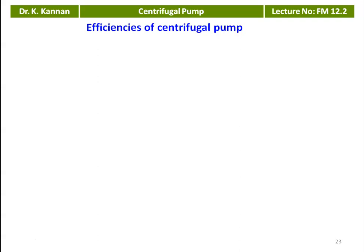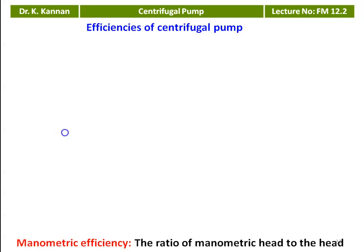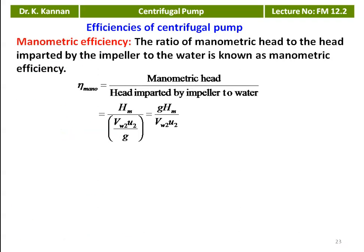Once we know the various losses occurring in the centrifugal pump, we calculate the efficiency. The first is manometric efficiency — the ratio of manometric head to the head imparted by the impeller to the water. The manometric efficiency equals G·Hm divided by Vw2·U2, where Hm is the manometric head and Vw2·U2/g is the work done by the impeller.